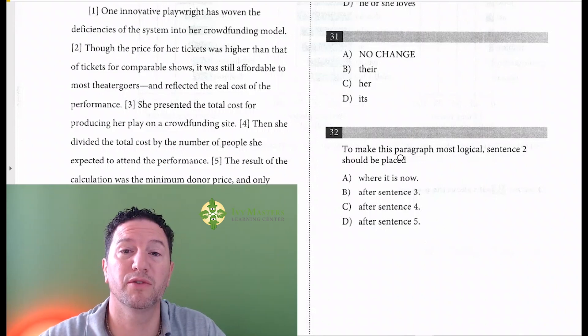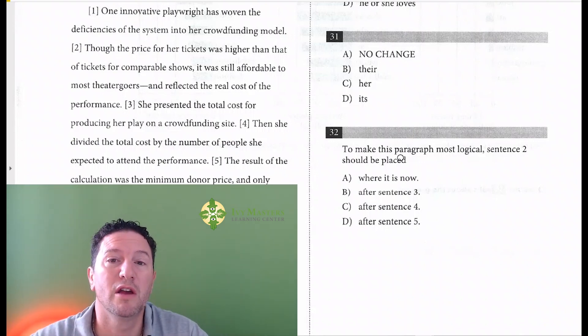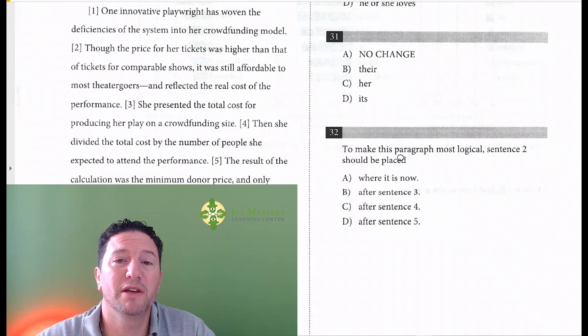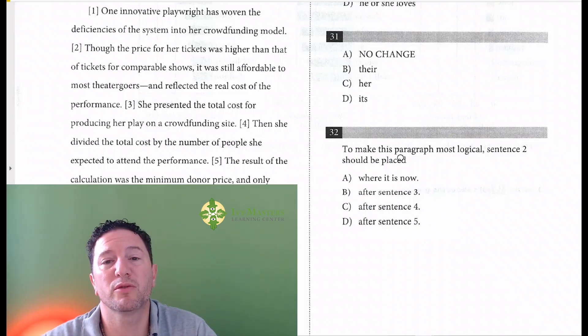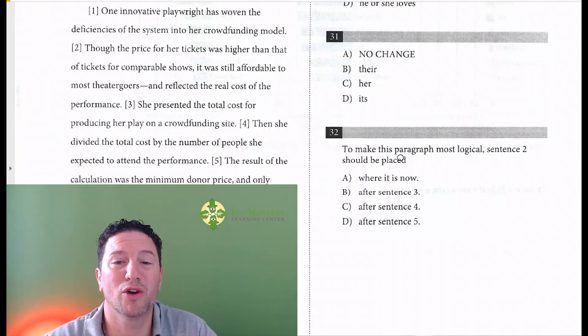If in either spot it goes specific to general, you know it's in the wrong spot. Paragraphs also go from problem to solution, so if you place a sentence and either before or after it goes solution to problem, you know it's in the wrong spot. Always read that sentence after, because students always read it with the sentence before, but usually what makes the difference between the right and wrong answer is the transition after.